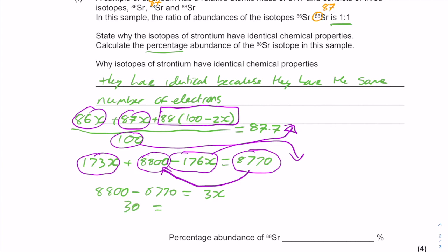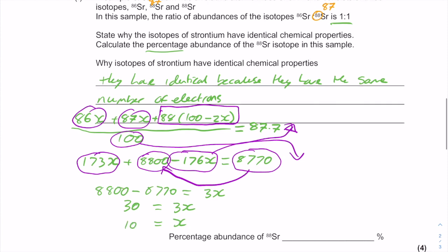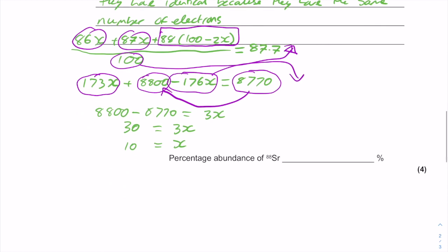Just scroll down a little bit to get a bit more space. So if we know that the abundance for 88Sr was 100 minus 2x, we now know the value of x is 10, so it'll be 100 minus 2 times 10, which will be 80. And therefore the abundance there is 80.